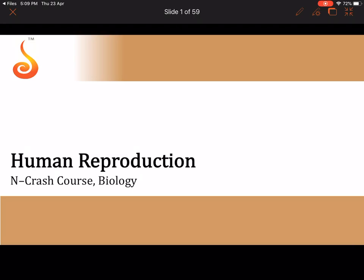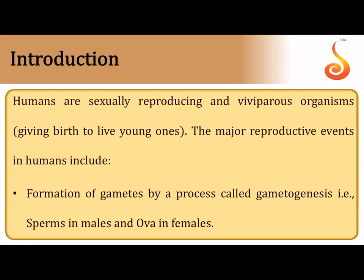Welcome to this crash course — a quick synopsis of two chapters. The first is human reproduction. Humans are sexually reproducing organisms and we are viviparous, meaning we give birth to live young ones. The first step in human reproduction involves the process of gamete formation.